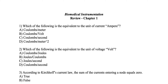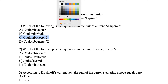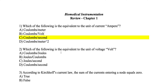Question number 1 says: which of the following is the equivalent to the unit of current, which is the ampere? Is it coulombs per meter, coulombs per volt, coulombs per second, or coulombs per meter square? The answer for this question is actually number C — coulombs per second — because the current is the rate of change of charges per unit time.